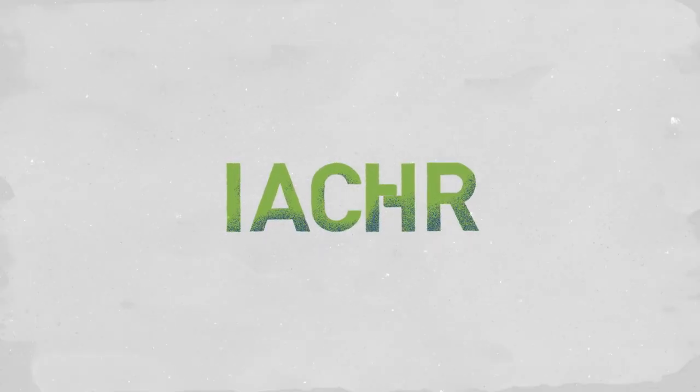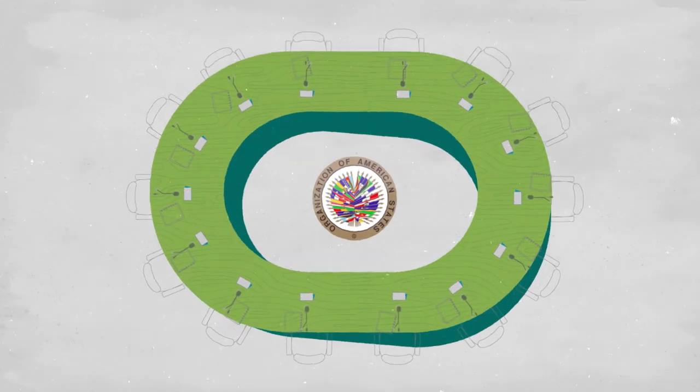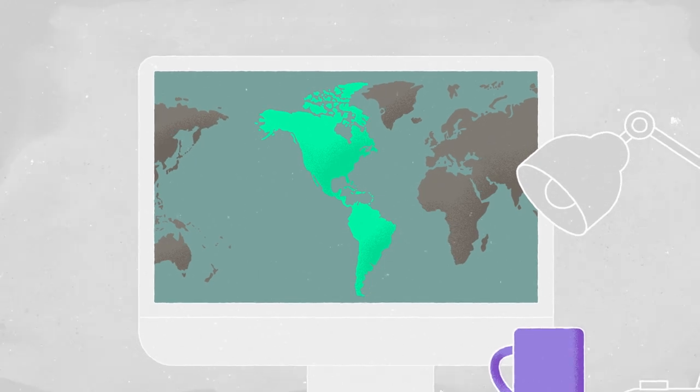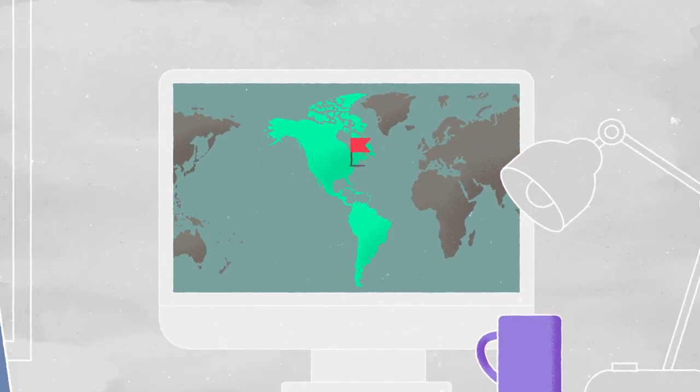The Inter-American Commission on Human Rights is an autonomous organ of the Organization of American States whose mission is to promote and protect human rights in the Americas. The Commission has its headquarters in Washington DC.